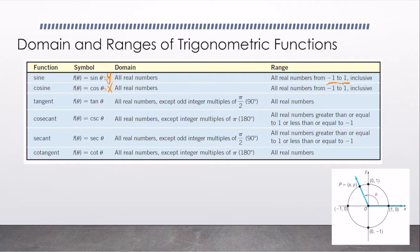Sine is 1 at π over 2. Sine is negative 1 at 3π over 2. Cosine is 1 at 0 degrees or any multiple of 2π. Cosine is negative 1 at π or any odd multiple of π.